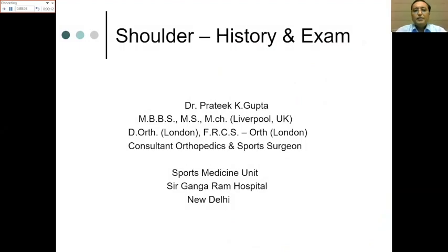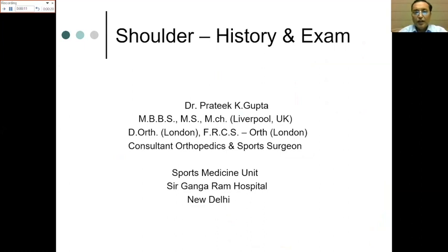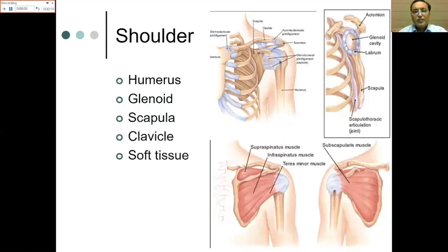Today I'll be speaking on history and examination, which is the first basic thing for a postgraduate when met with a case of a shoulder during the exam. The shoulder is a complex joint including the humerus, glenoid, scapula, clavicle, and the soft tissue around. We should not forget the soft tissue because they form an integral part of the shoulder joint.